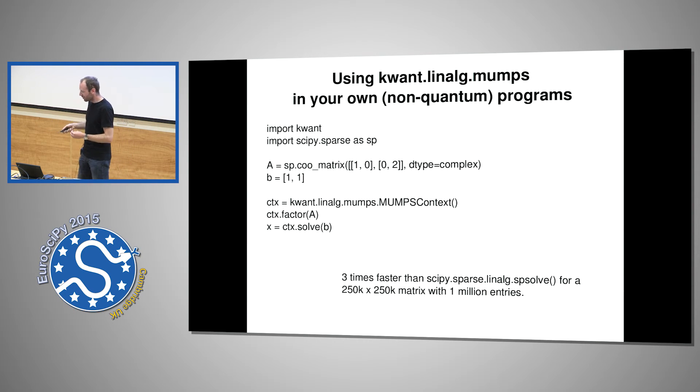I did a little test. It's three times faster than what is in SciPy for solving a matrix that is 250,000 by 250,000. With MUMPS with this code it takes five seconds on my laptop, with SciPy it's 15 seconds. If you go to even bigger matrices like the ones which would need one hour to solve, it will save you a factor of ten. So if you regularly solve sparse matrices have a look please.